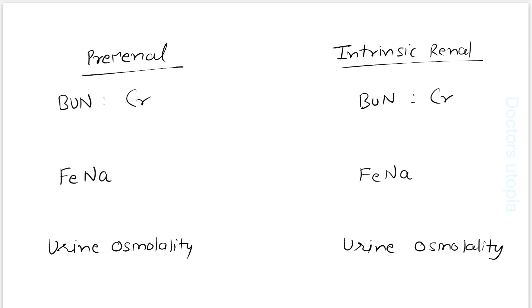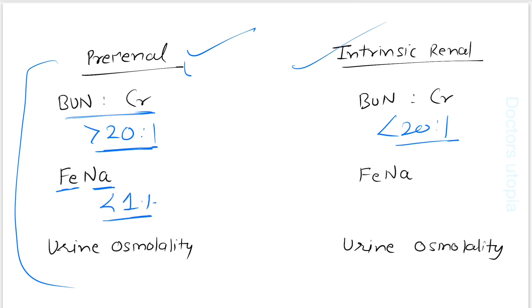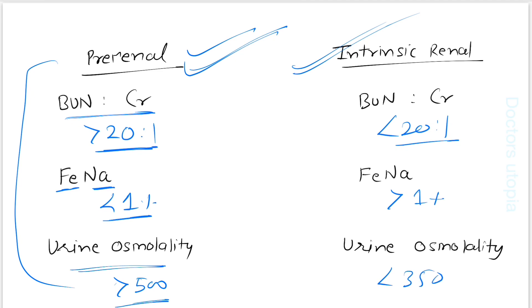To distinguish pre-renal from intrinsic renal causes, we use three tests. First, the BUN-to-creatinine ratio: if it's more than 20:1, it suggests pre-renal cause. Second, the fractional excretion of sodium (FENa): less than 1% indicates pre-renal, more than 1% indicates intrinsic. Third, urine osmolarity: more than 500 suggests pre-renal, less than 350 suggests intrinsic.